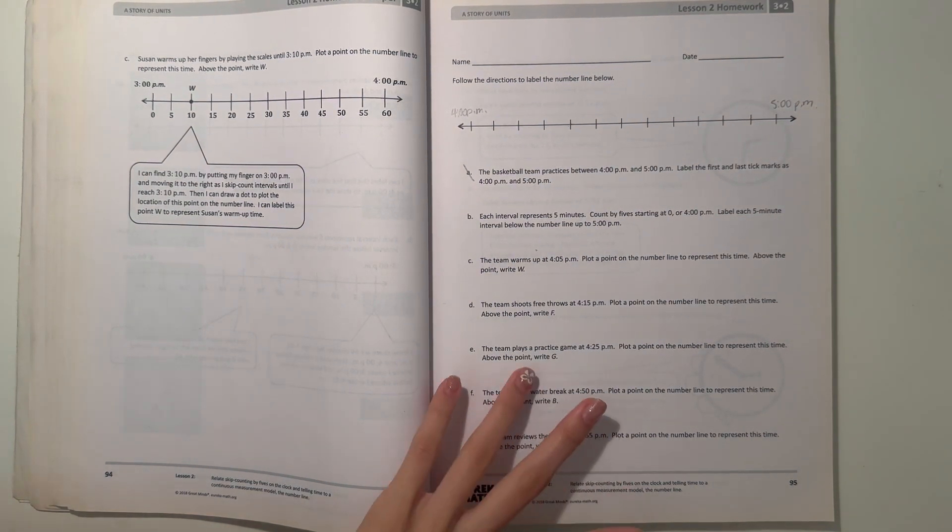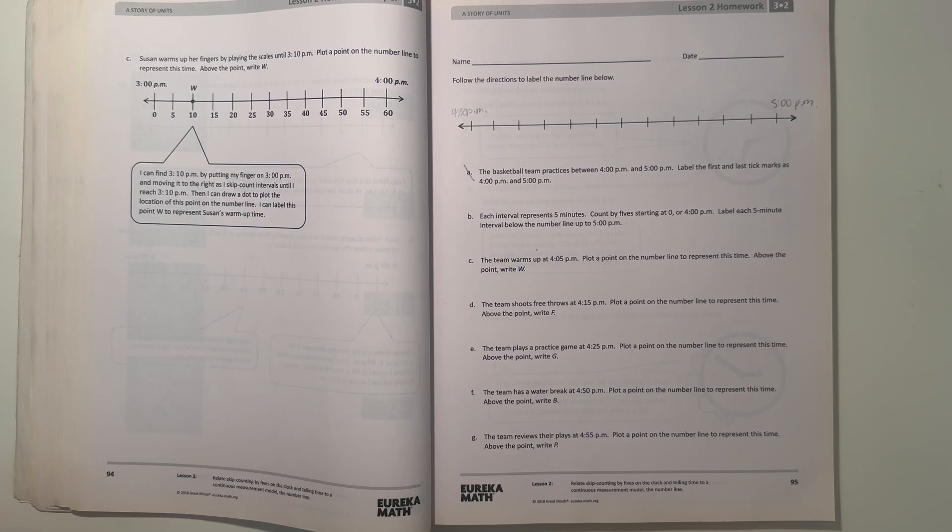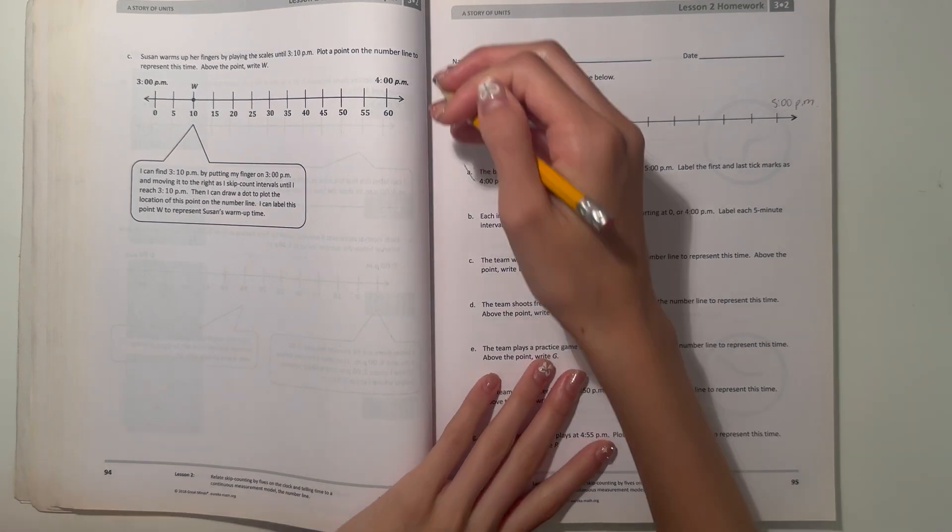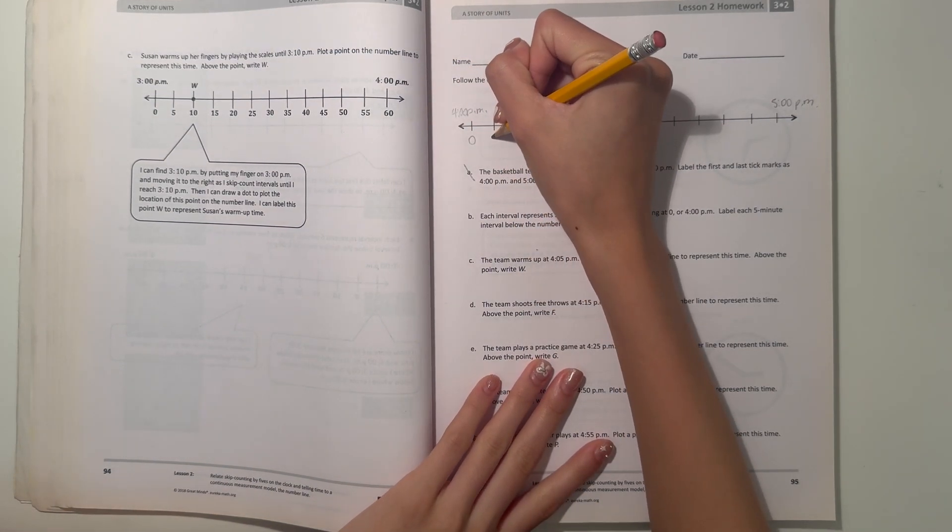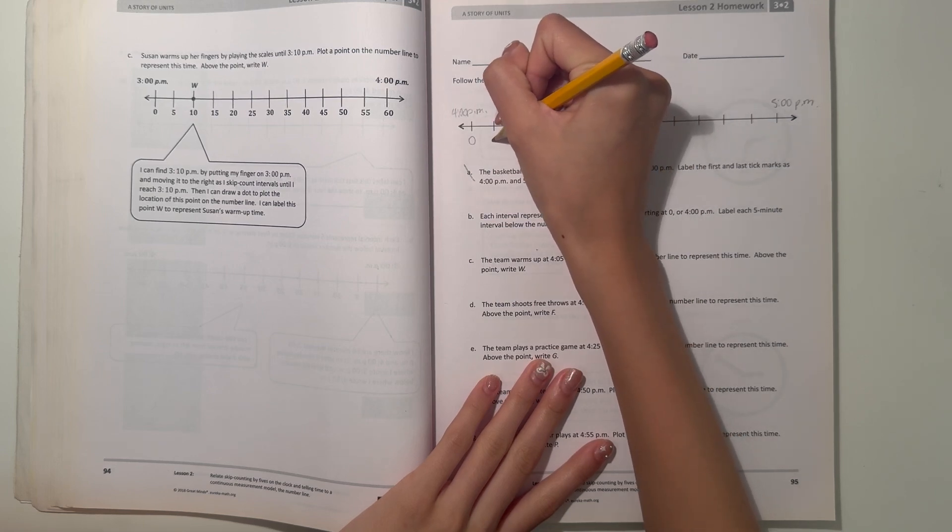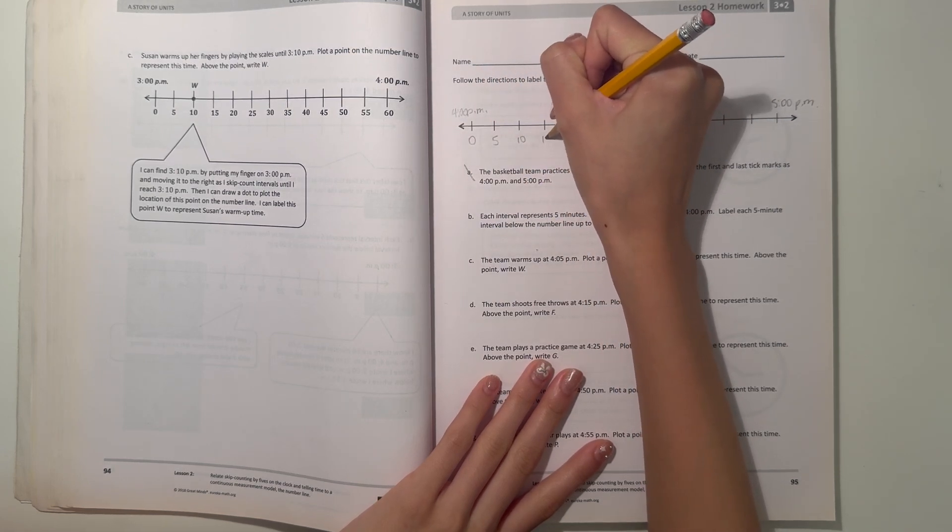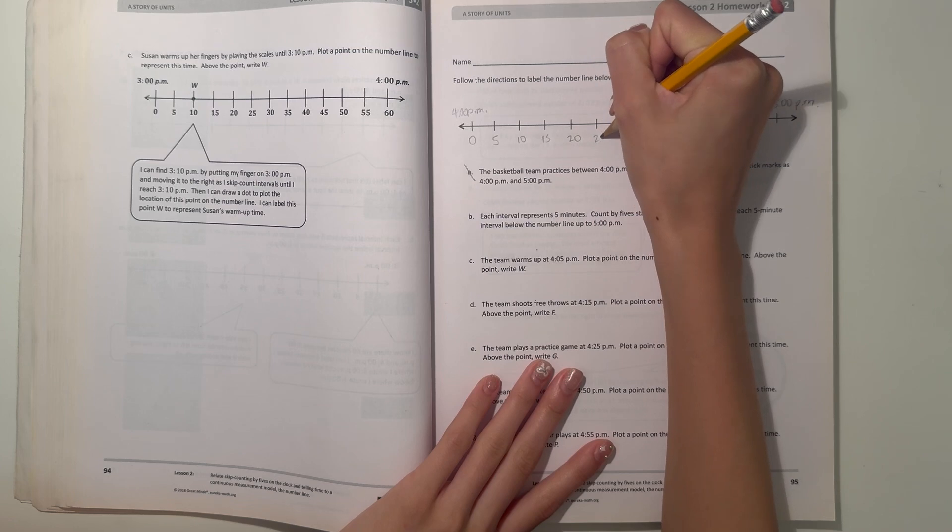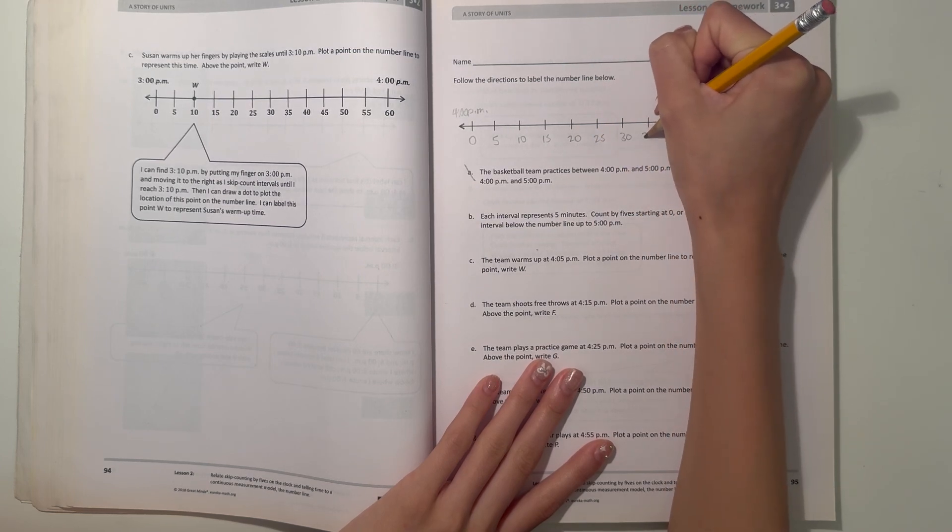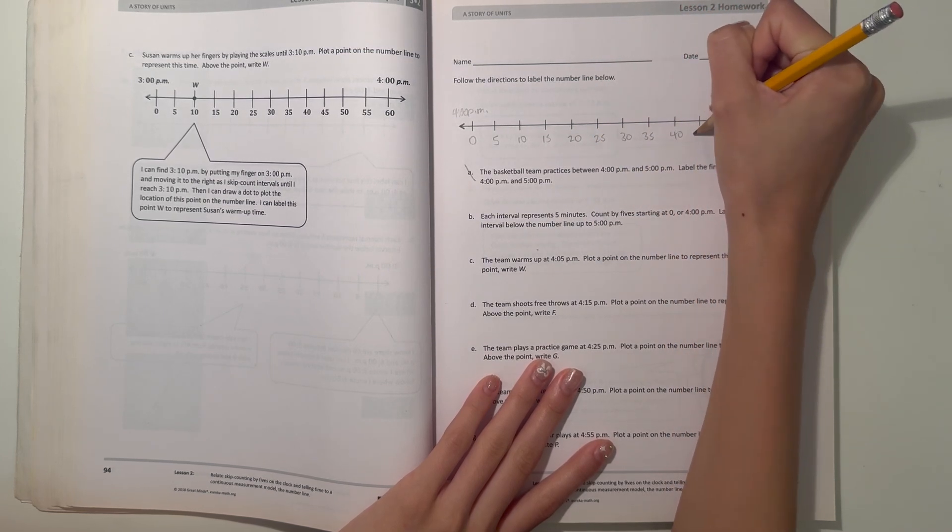So 4 p.m. is zero, and then we skip count by five: 5, 10, 15, 20, 25, 30, 35, 40, 45, 50, and 55, and that would be 60.